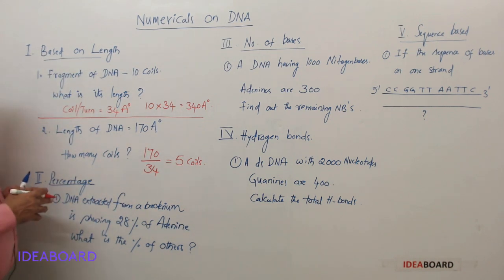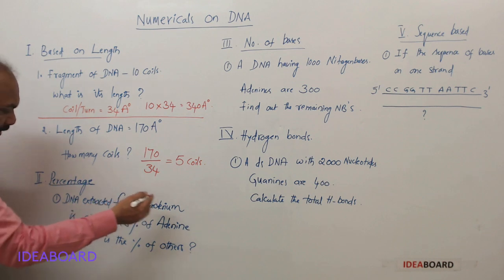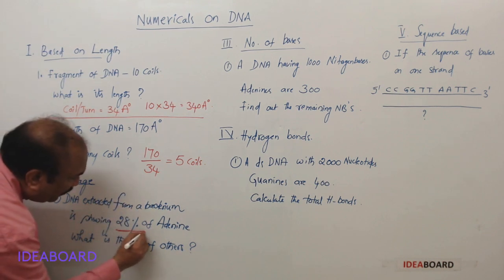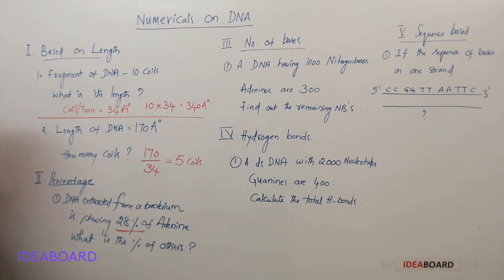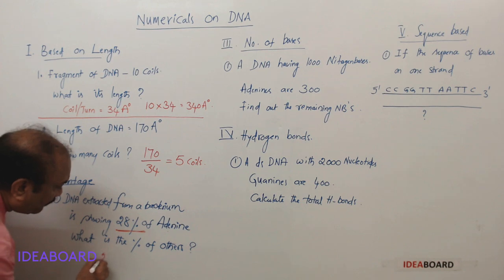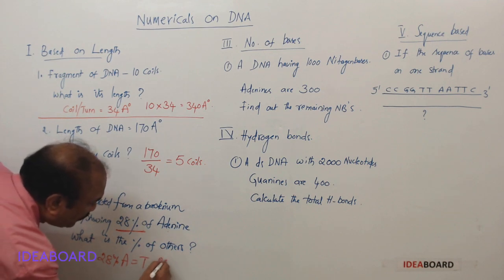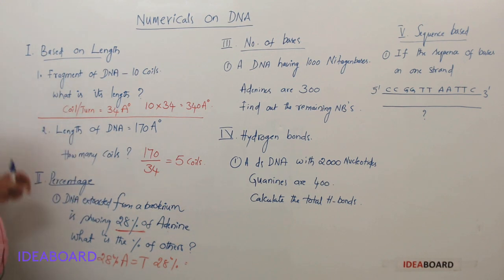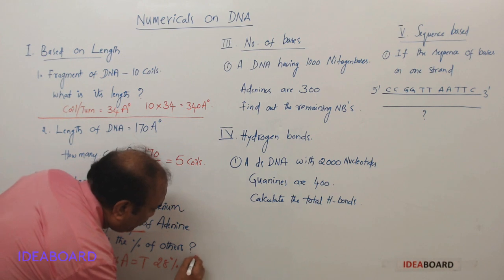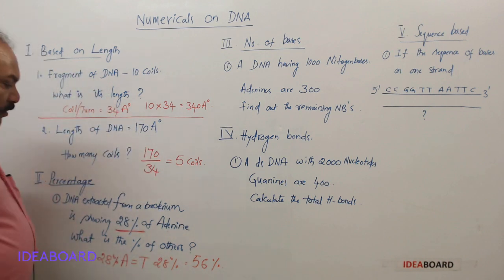Now let us see the percentage-based questions. Here I am reading out the question: a DNA extracted from a bacterium is showing 28 percent of adenine. What is the percentage of the remaining? We should not forget Chargaff's rule. If there is 28 percent adenine, then the equal amount of thymine will be there—so that is 28 percent. 28 and 28 together, 56 percent. Now how much is left? 44 percent.